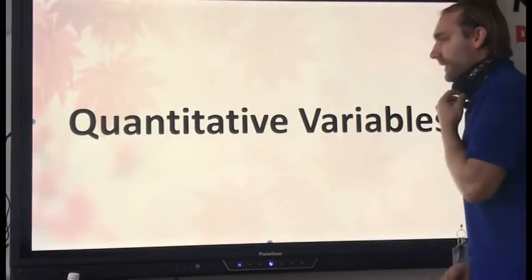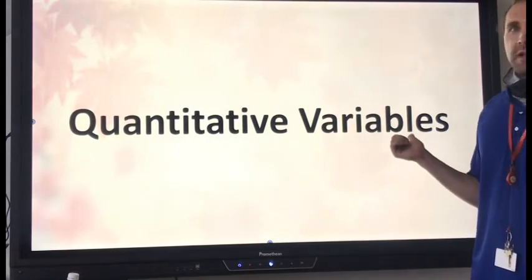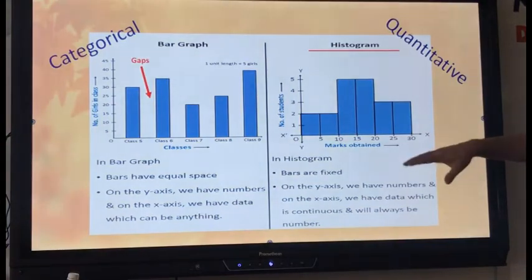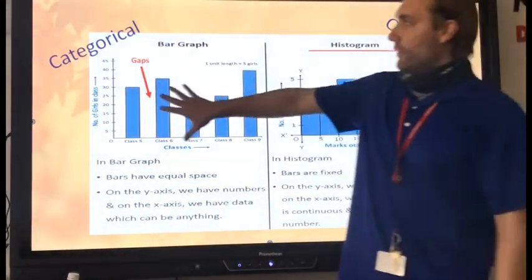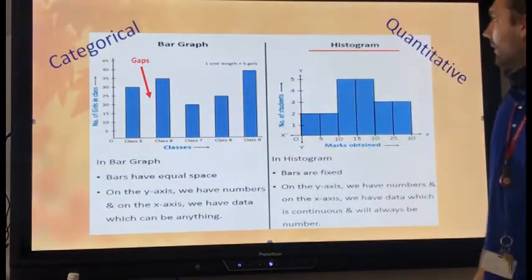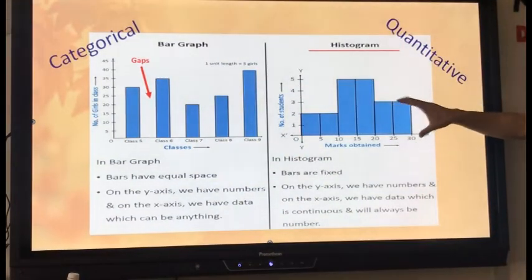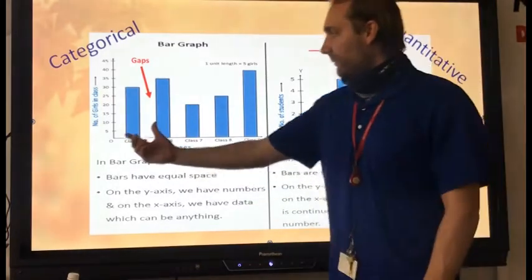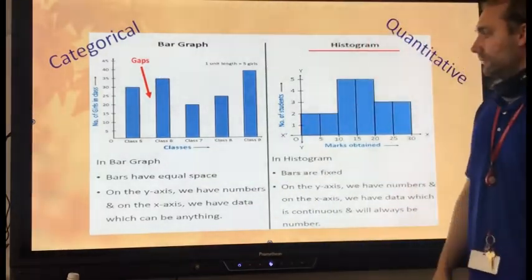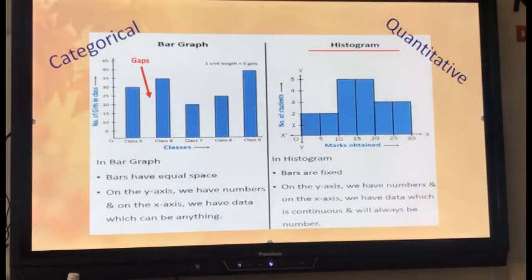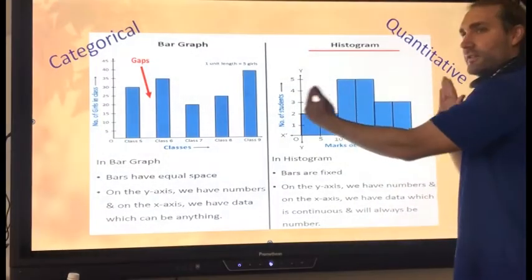Now let's take our quantitative variables that we can calculate and turn them into graphs, something more visually appealing. Now remember you told me about a bar graph. Bar graphs are what you get when you have categorical variables. Looks the same, looks like a bar graph, but if you're talking about quantitative, it's actually called a histogram. Notice there are some difference. Bar graphs have equal space between them. Histograms, there's no gaps. It's all together.